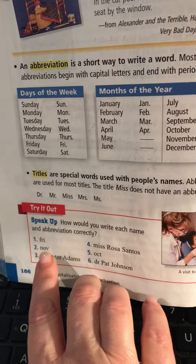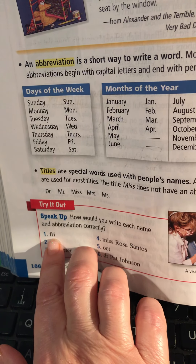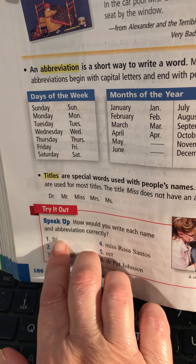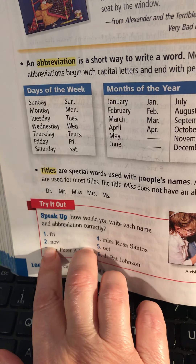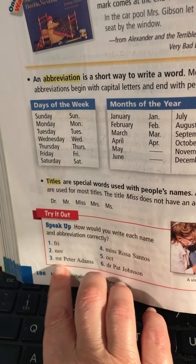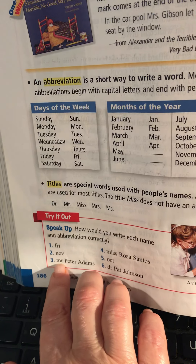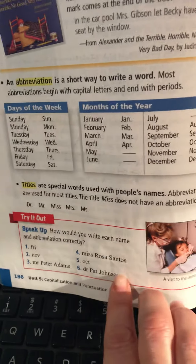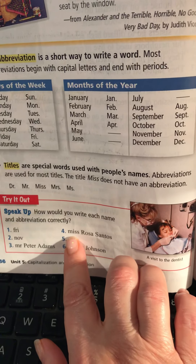Mr. is for all males, and of course Dr. is for a doctor. If you look over at the 'Try It Out' section: how would you write each name and abbreviation correctly? For Friday — how many of you said capitalize the F and put a period? For November — capitalize the N and put a period. For Mr. Peter Adams — capitalize the M in Mr. and put a period.